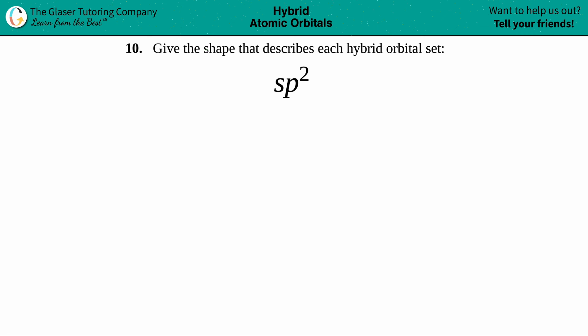Number 10: Give the shape that describes each hybrid orbital set, sp². We're going to be doing some drawing. We need to draw the shape of what an sp² hybrid orbital looks like.